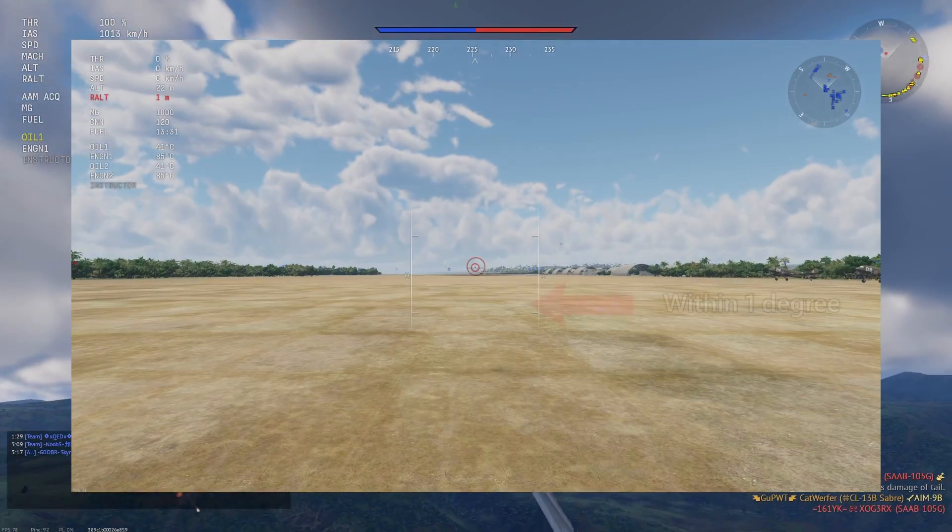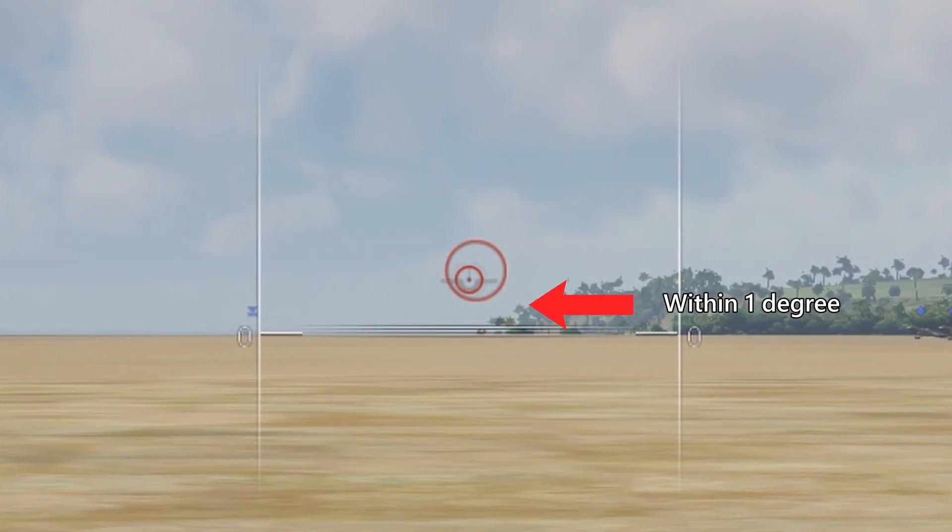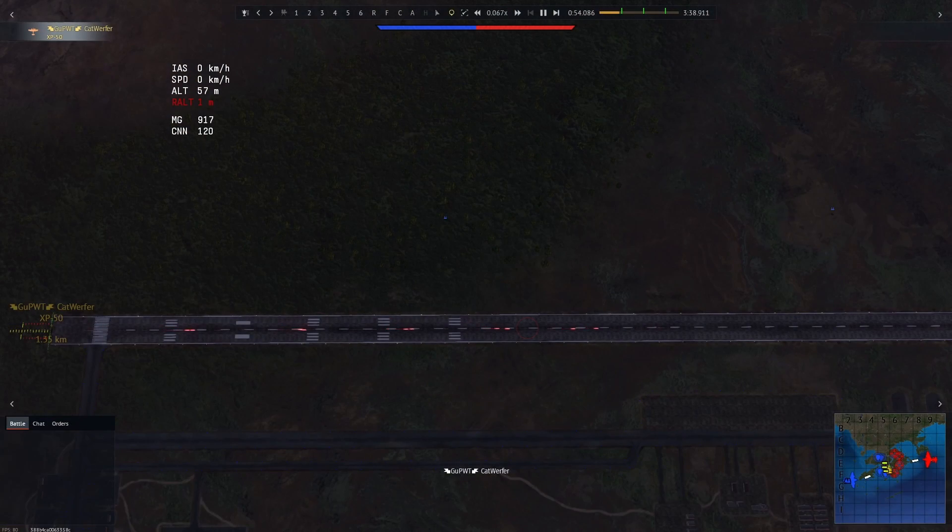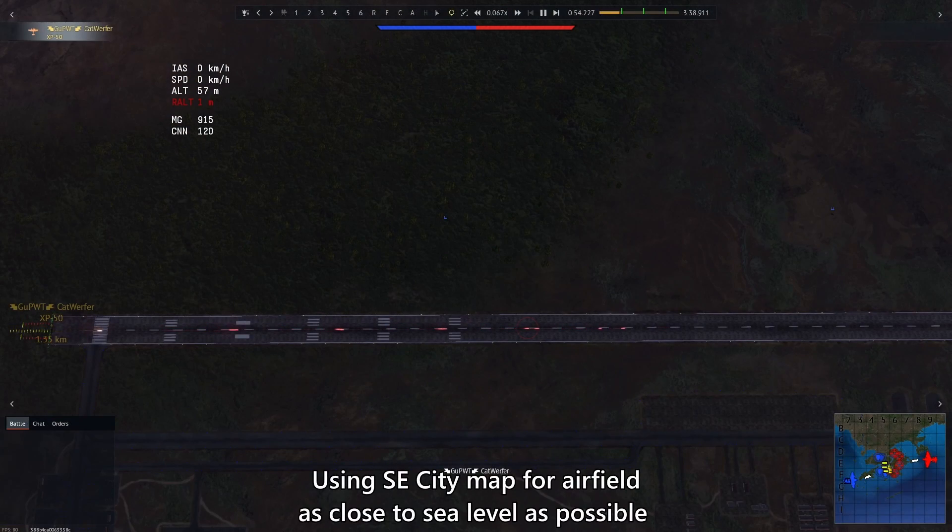So I chose the XP50's 50 cals because the nose points only very slightly above the horizon. So now I'll sit on the airfield, fire off some tracers, and then I'll save the replay so that I can slow it down and measure how long it takes for the bullets to travel a certain distance.